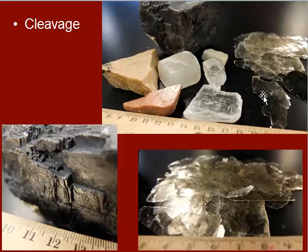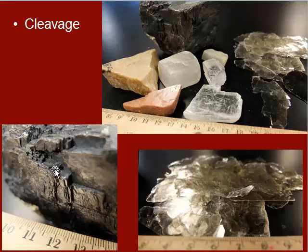Minerals can have one, two, or three planes of cleavage. Sometimes your mineral might not break on a nice flat surface, but you'll see what looks like little stair-stepped patterns on the mineral — that's a sign it does have cleavage as well. This will become clearer when you actually have the minerals in your hands in lab.